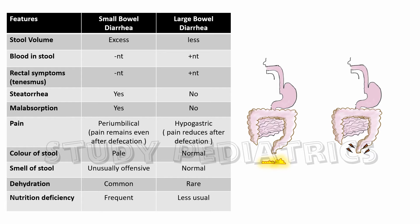Pain in small bowel diarrhea occurs usually at the periumbilical area, whereas in large bowel diarrhea it is slightly below, at the hypogastric region. The color of the stool is determined by its content, and since most contents are absorbed by the small bowel, color changes occur in small bowel diarrhea. Smell is similarly related — undigested content makes the stool more liquid, so the smell is more offensive in small bowel diarrhea and normal to less offensive in large bowel diarrhea.